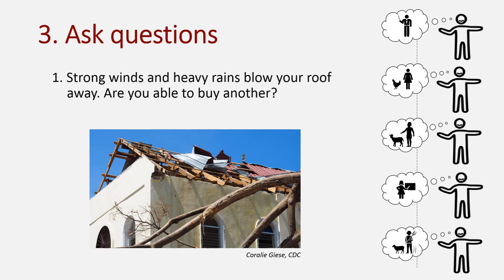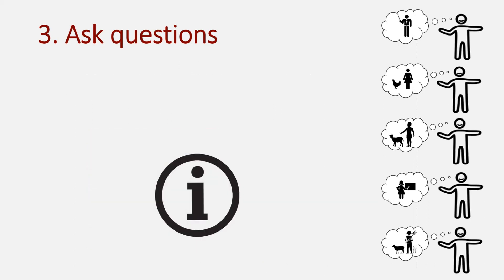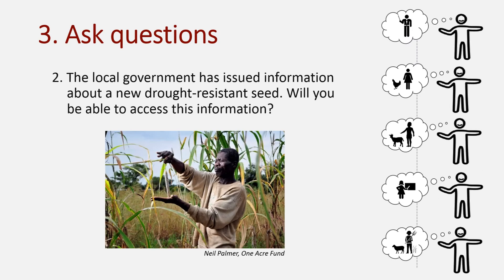You might also want to demonstrate that not everyone has access to important information, and could do this through a question like this one. The local government has issued information about a new drought-resistant seed. Will you be able to access this information?